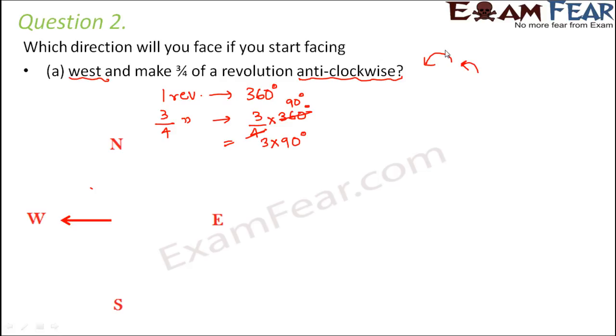So let's make this arrow move in the anti-clockwise direction. For how many degrees? For 3×90 degrees. If we divide it into four quadrants, this is 1st 90 degrees, this is 2nd 90 degrees, and this is 3rd 90 degrees. So when it actually starts rotating, where will it end? It reaches towards north. So that means now you will face towards north. If you start from west and make 3/4 of a revolution anti-clockwise, then you would reach towards north.